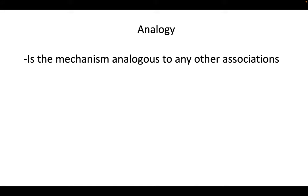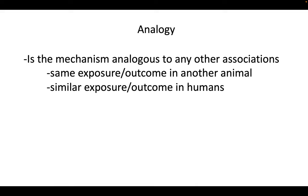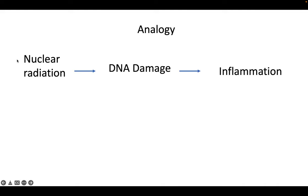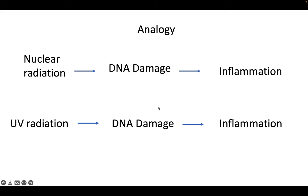Analogy is kind of similar but a little easier to differentiate. It's whether the mechanism causing this cascade of events has analogies elsewhere — like the same exposure-outcome relationship in another species, or something in humans with a comparable exposure-outcome relationship. One example is that nuclear radiation can cause DNA damage, leading to inflammation and skin reddening. The mechanism is very similar with the sun — even though it's a different kind of radiation, it's still radiation causing DNA damage leading to inflammation. So we have an analogous mechanism already established, which supports the new association we're studying.